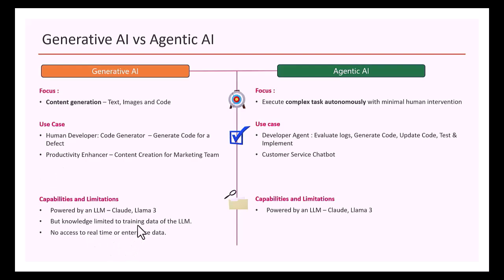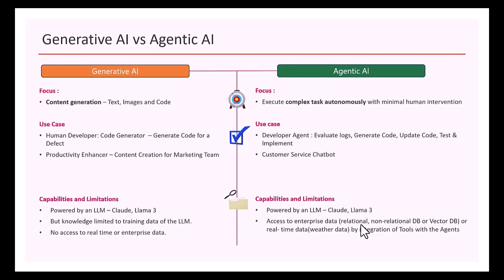For example, if an LLM's training was completed in June 2023, it cannot answer questions about events after that date and cannot tell you today's weather in New York. Agentic AI, on the other hand, can integrate with enterprise data sources — relational, non-relational, and vector DBs — and access real-time data such as weather, hotel bookings, and flight bookings by integrating with tools that make API calls to backend systems.